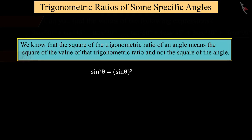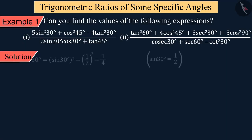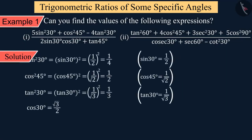Therefore, we take the value of sin² 30° as equal to the square of sin 30°. That is, sin² 30° equals (sin 30°)², which on solving gives 1/4. Similarly, we get the values of other trigonometric ratios and solve the above equation.